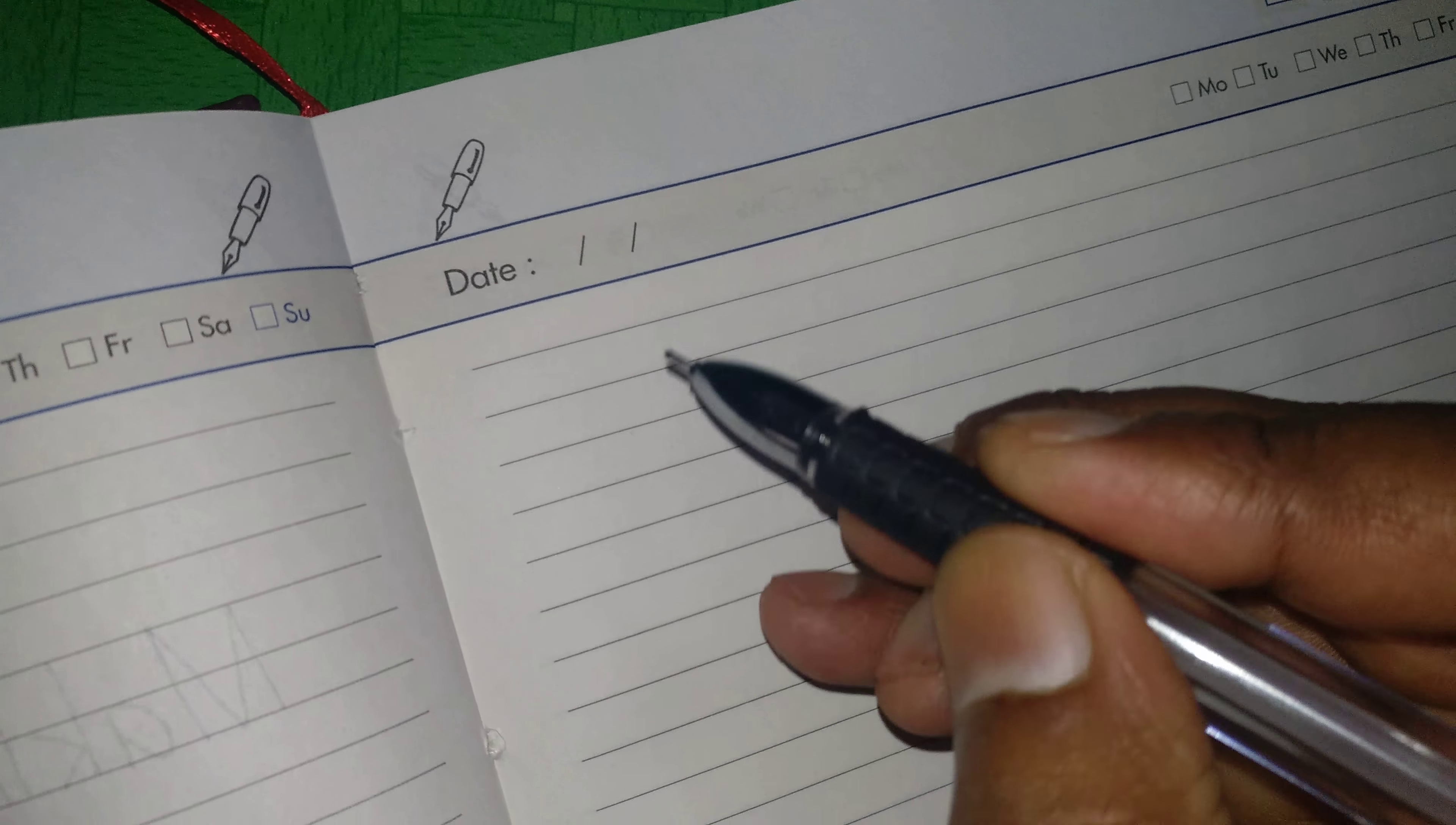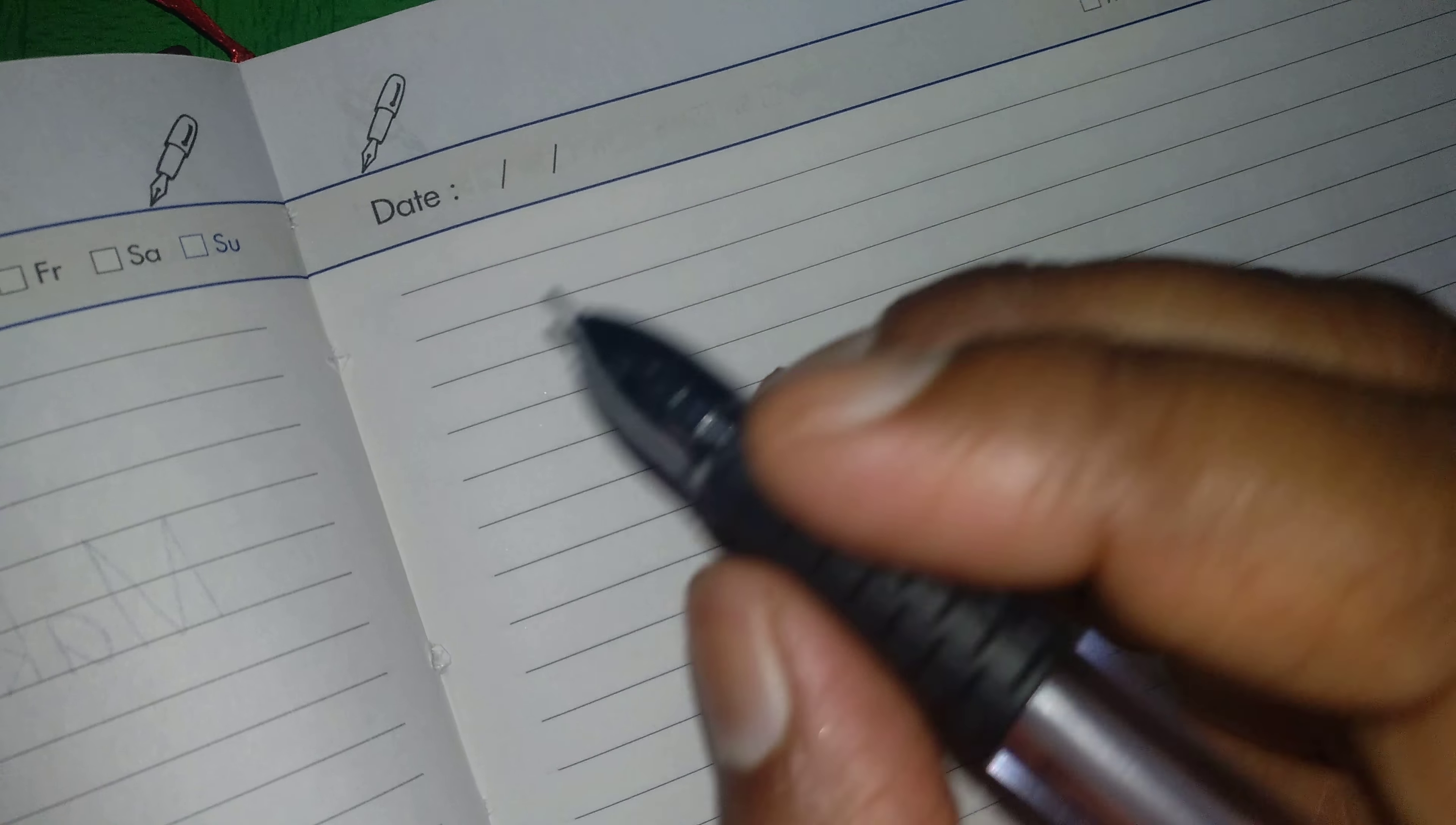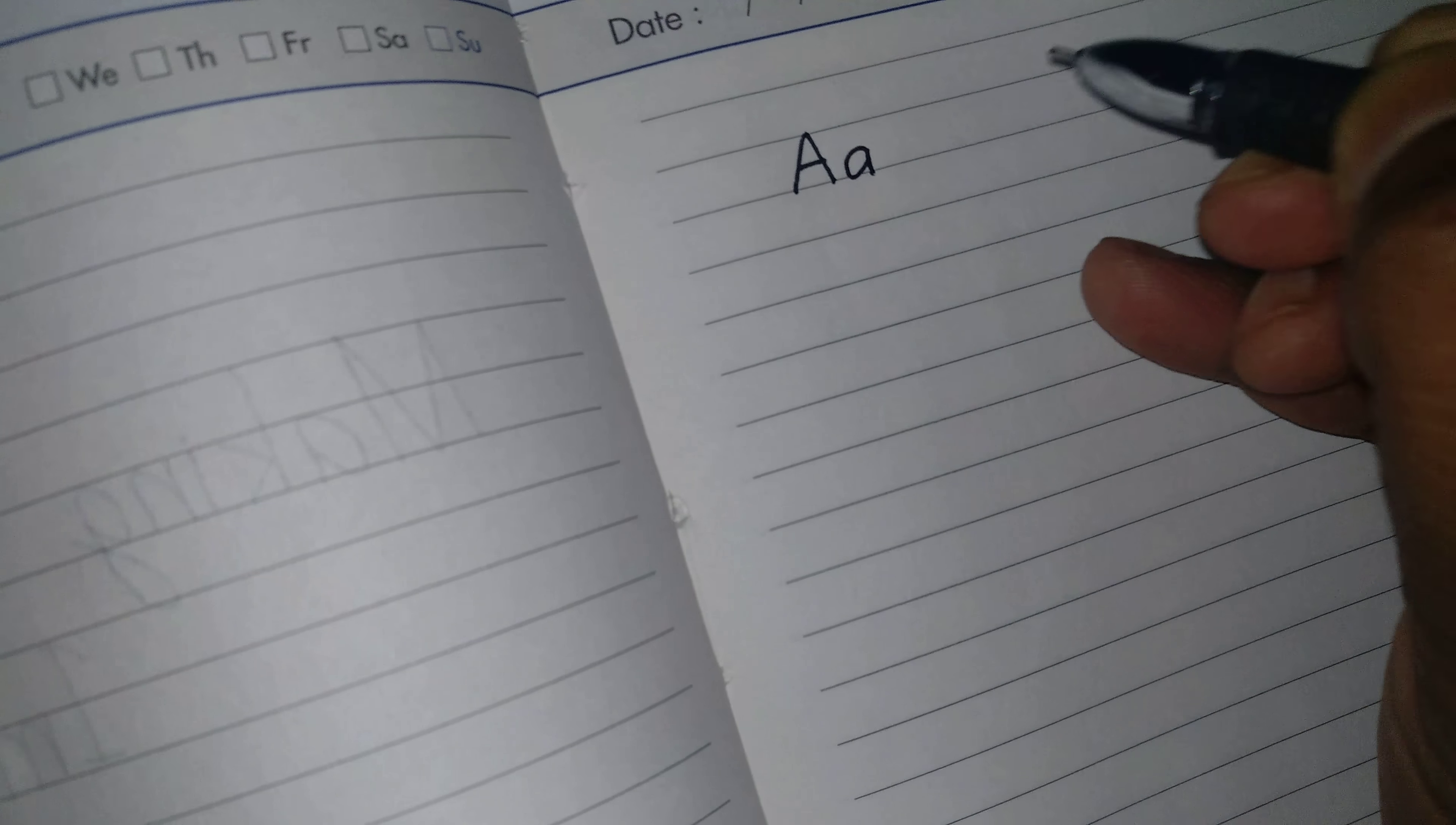Holding the pen correctly is the first step for writing in good handwriting. Your grip should have a foam grip, but your hand should be very flexible. Let's start like this: A and this is small one, and this is B and this is small one. You should follow the same order as I have been doing.